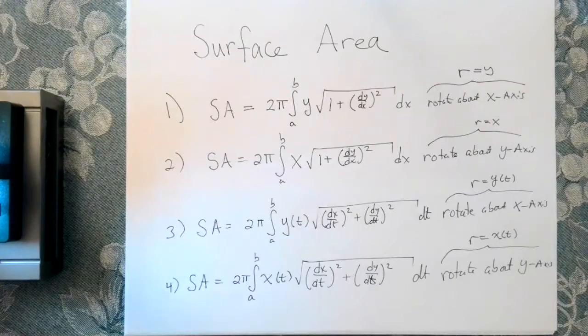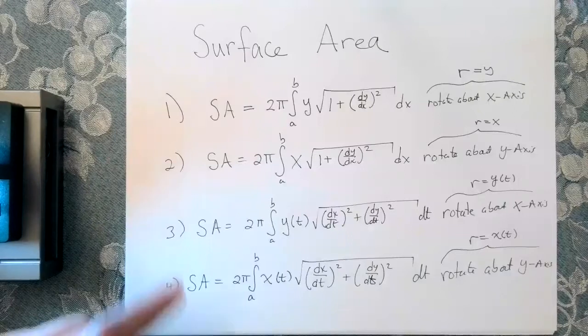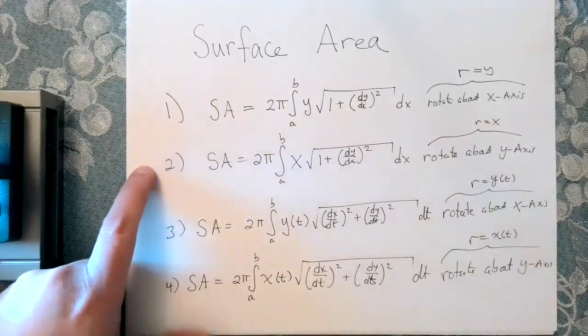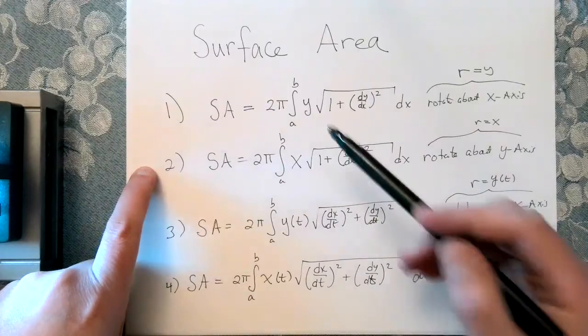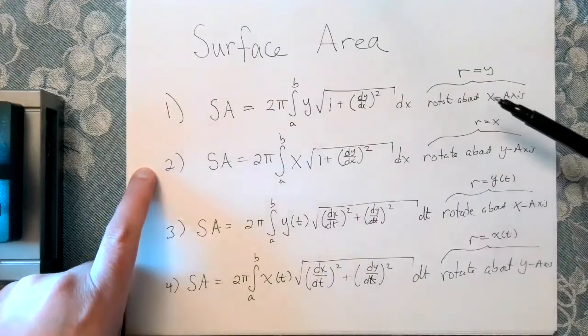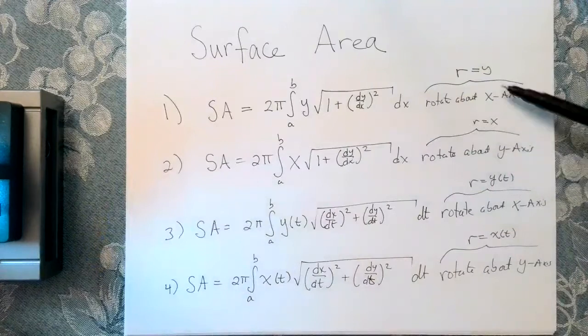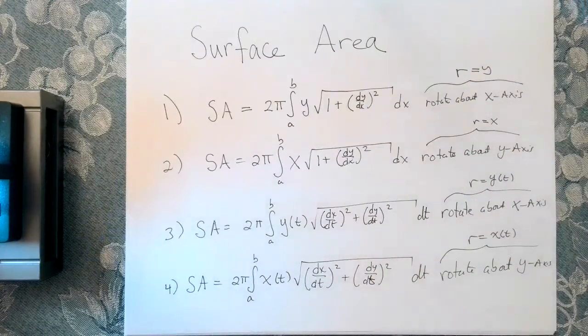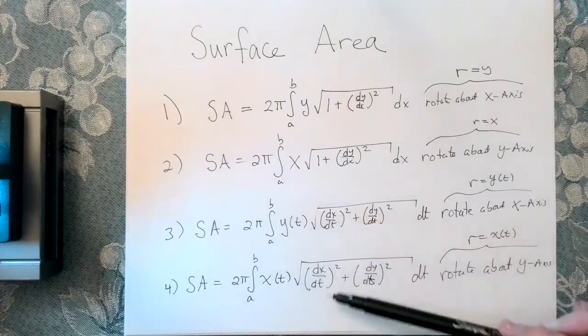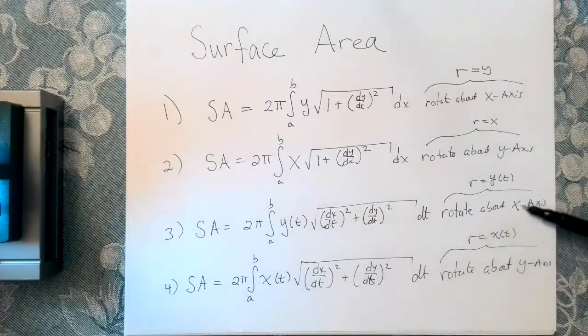So I just want to remind you of the surface area formulas for doing this. In the first two cases, we have some continuous curve, y equals f of x, and of course that's continuous on a, b. And these are the formulas for the various spinning situations you'd come across. And in 3 and 4, we have some curve that's represented parametrically, and here are the corresponding surface area formulas based on the different rotations.